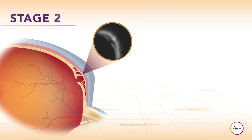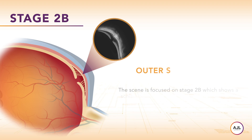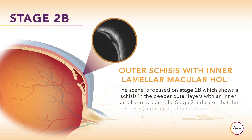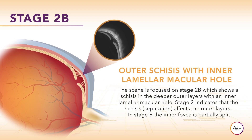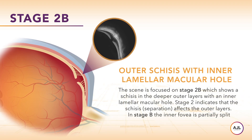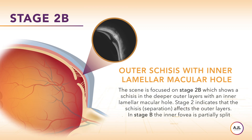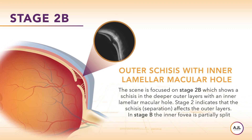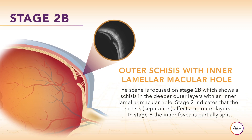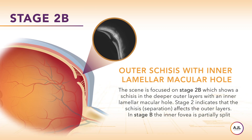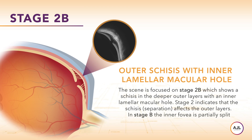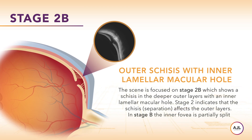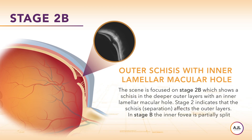Stage 2b shows schisis in the deeper outer layers with an inner lamellar macular hole. Stage 2 indicates that the schisis affects the outer layers. In stage B, the inner fovea is partially split.